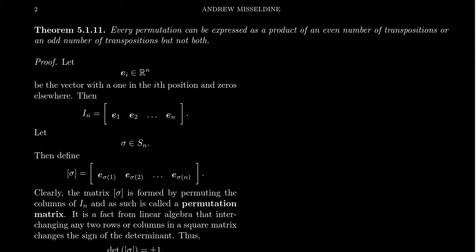So what can we expect to be consistent when we factor a permutation into transpositions? The idea is we can expect the parity to be constant. That is, the number of transpositions in the factorization will always be an even number or will always be an odd number. It's impossible to factor a permutation using both an odd number and an even number of transpositions.